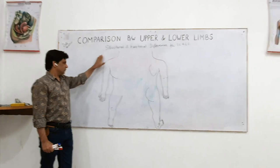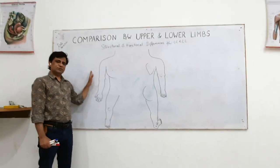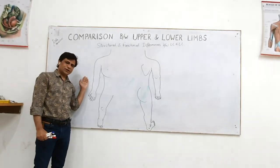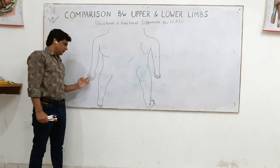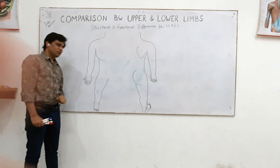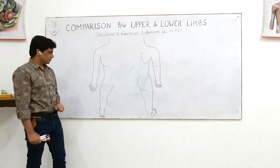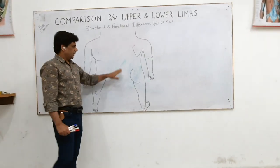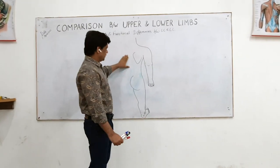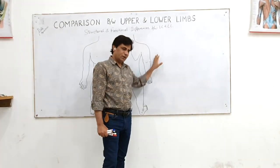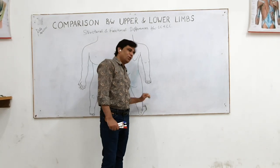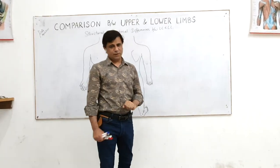Here you see the front of the upper limb, the front of the lower limb, and here you see the back of the upper limb and the back of the lower limb.